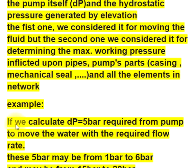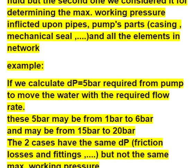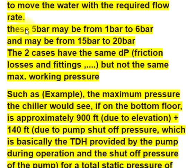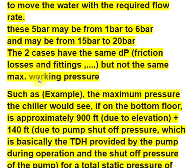For example, if we calculate DP equals 5 bar required from the pump to move water at the required flow rate, these 5 bar may range from 1 bar to 6 bar, or from 1.5 bar to 2.0 bar. The two cases have the same DP, friction losses, and fittings, but not the same maximum working pressure.